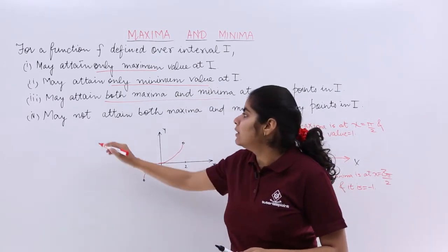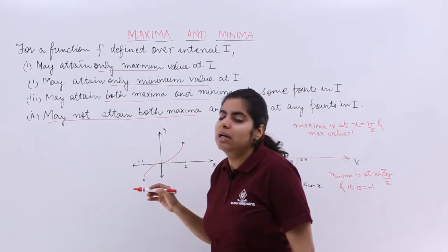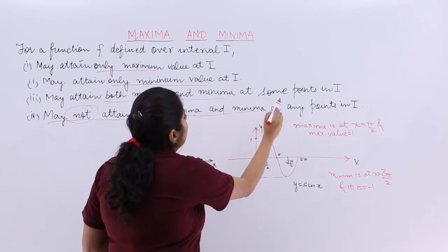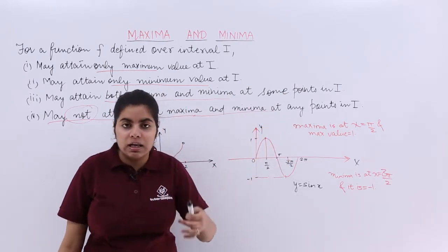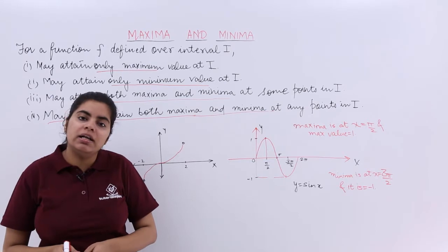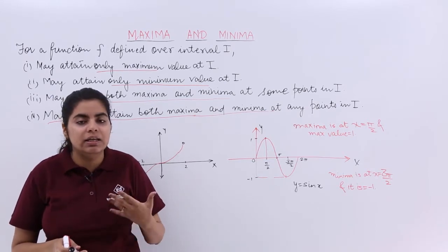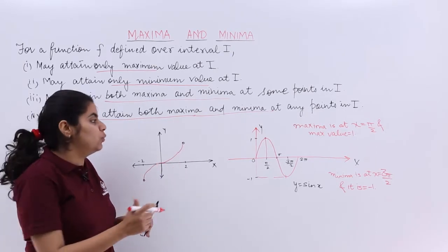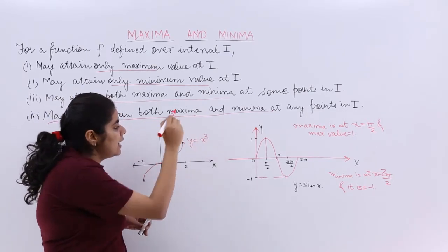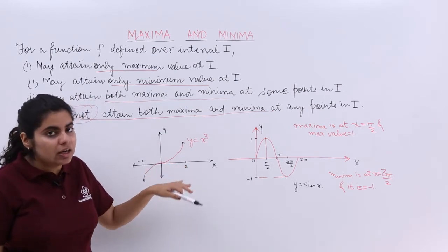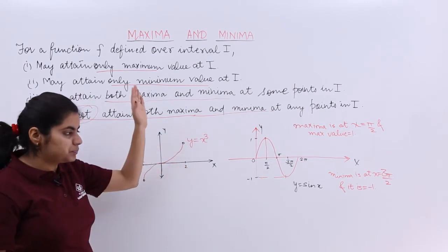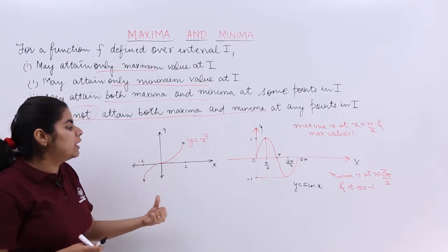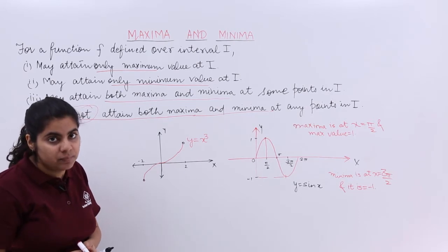Next, sometimes it may also happen that the graph may not attain both maxima and minima. Means it may not have maxima, it may not have minima. What kind of a graph are like these? So some graphs of these are into picture when we study the later videos. But one such example can be taken as y is equal to x³. See this is x³ graph. x³ is such kind of a curve which goes somewhere like this. Again a very roughly made curve.